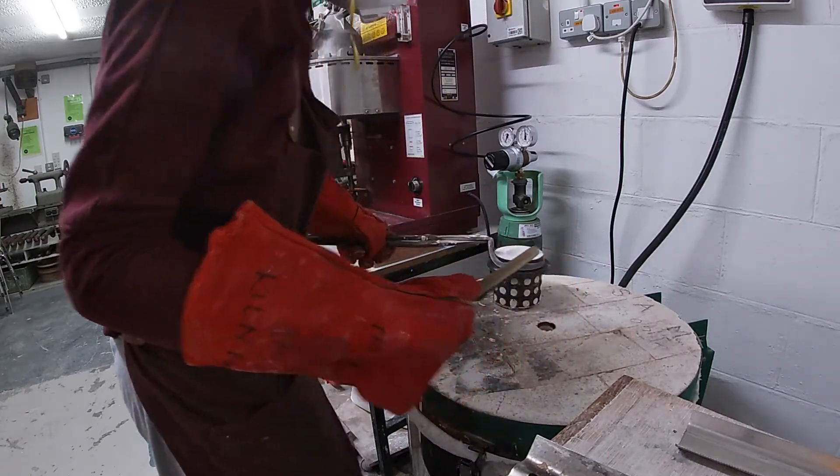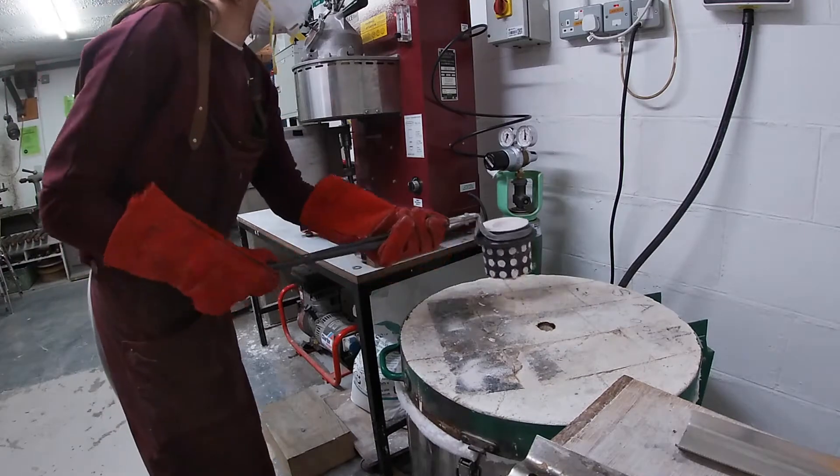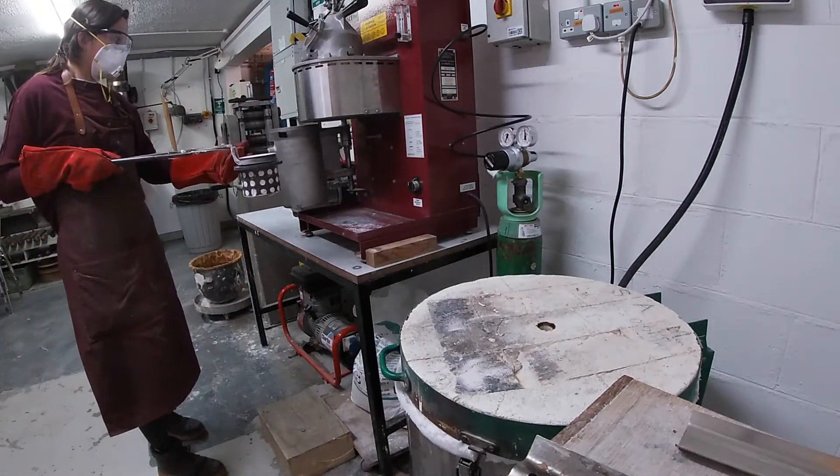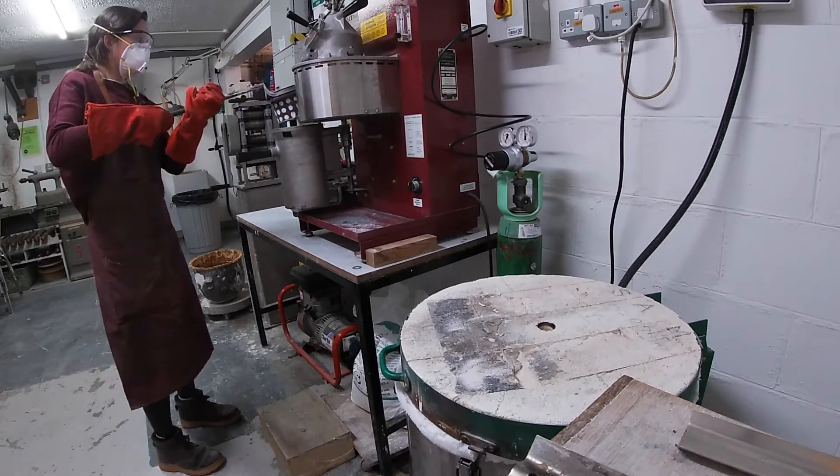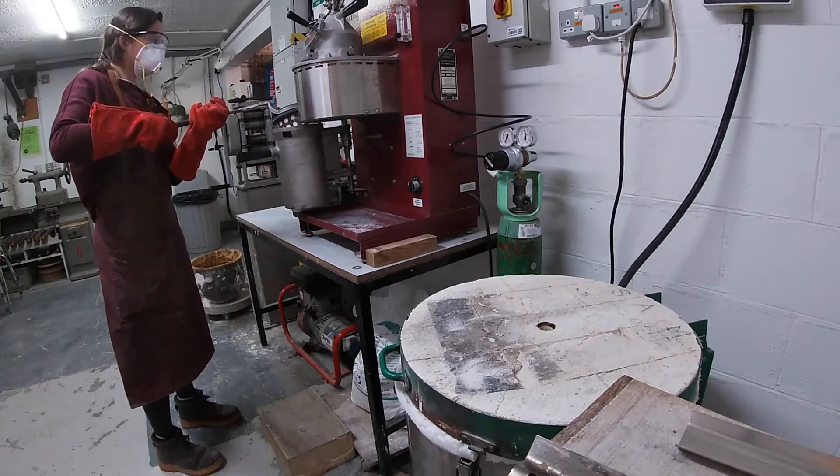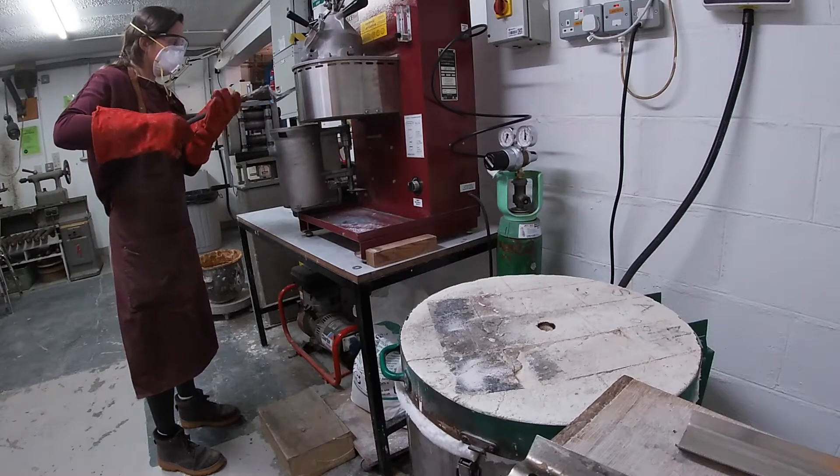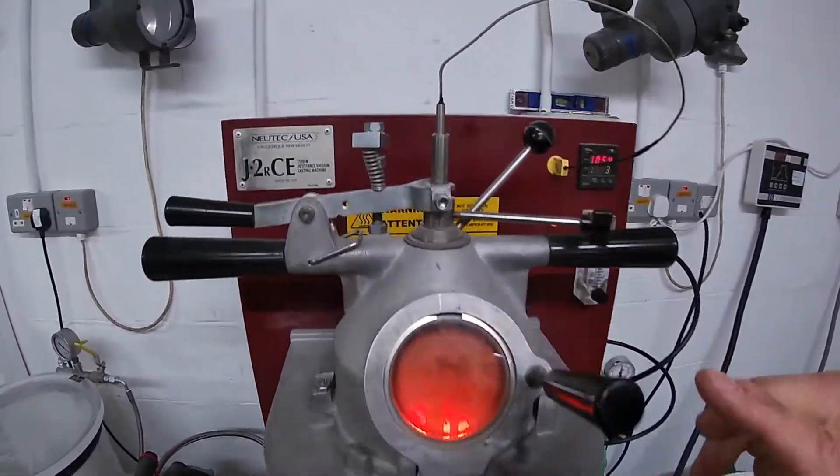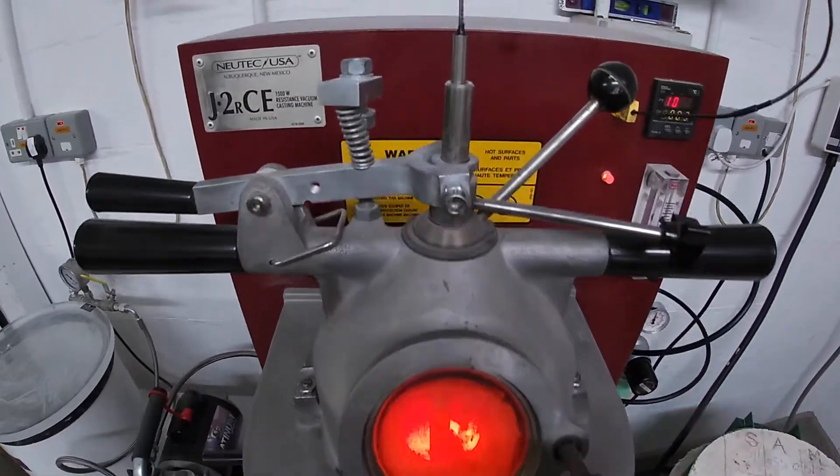The flask is taken from the kiln which is held at about 650 degrees Celsius. This is to ensure a smooth cast. We don't want too much of a sudden temperature difference between the molten metal and the flask. This is to help the metal reach all parts of our tree.